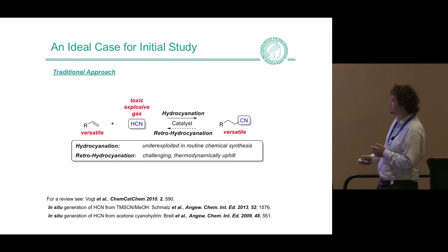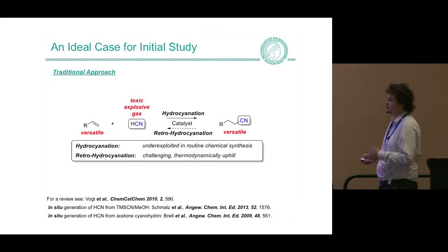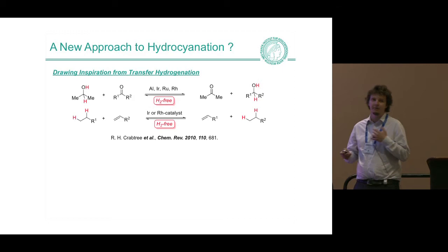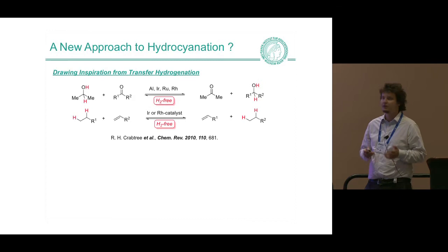The problem is that hydrocyanation chemistry has never been used much in the lab, because it relies on using the highly toxic and dangerous HCN gas. Also, the reverse reaction is not possible under normal reaction conditions because it's thermodynamically uphill. Our inspiration came from transfer hydrogenation — a very powerful reversible reaction where you're able to shuttle a hydrogen molecule between two substrates without actually using the gas. We thought this could provide a fantastic opportunity to extend this concept to hydrocyanation: instead of transferring H2, why not transfer HCN? That would enable us to avoid using HCN directly, and we could also do the reverse reaction.